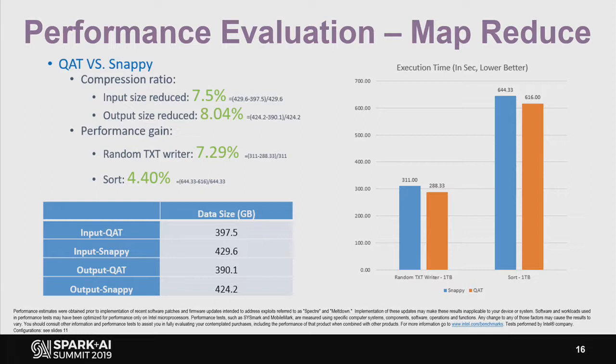We also benchmarked the sort workload using Hadoop MapReduce. For the input side, QAT also has a higher compression ratio compared with Snappy — the input side reduced about 7 percent, and the output side reduced 8 percent compared with Snappy. Due to QAT's high compression ratio and high throughput, the overall performance gain is about 4.4 percent.